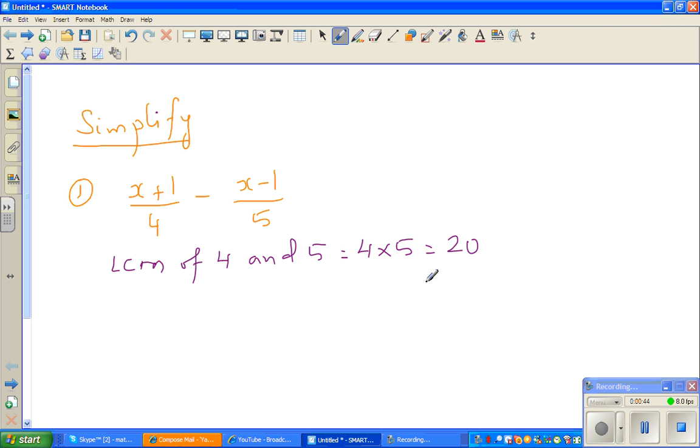So what does this mean? I want to make the denominators equal. So I have got this 4 here. If I want to make this 20, I have to multiply this with 5. So if you multiply this with 5, it also multiplies the top with 5.